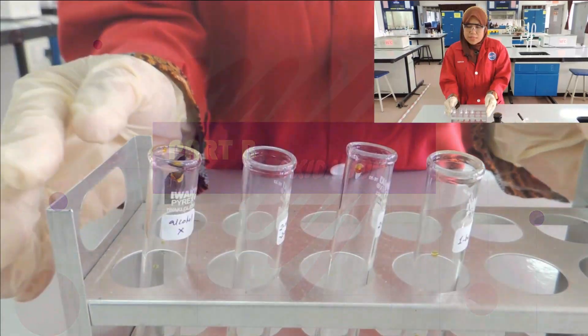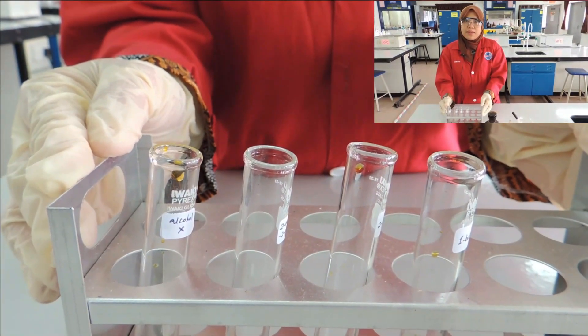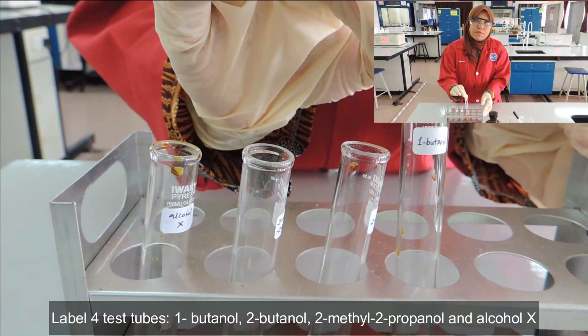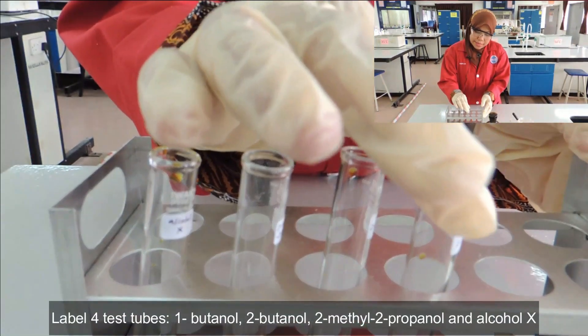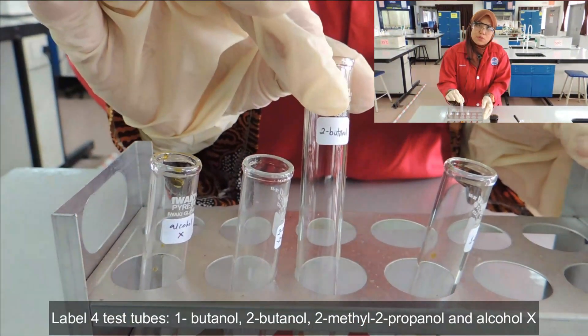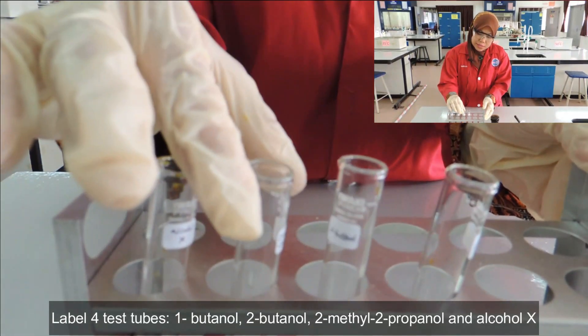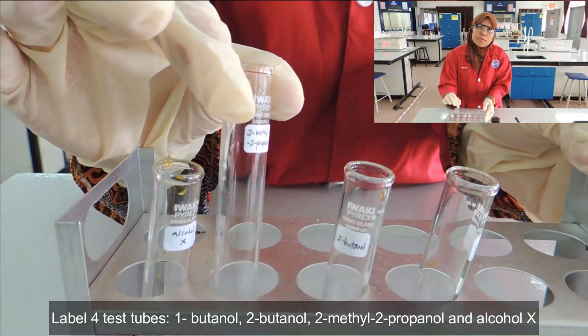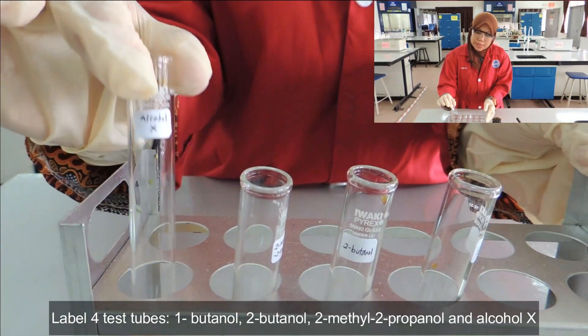We need 4 test tubes for this experiment. The first test tube is labeled with 1-butanol, the second with 2-butanol, the third with 2-methyl-2-propanol, and the last one is labeled with alcohol X.